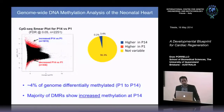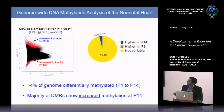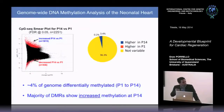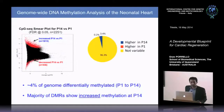Looking at genome-wide methylation changes from P1 to P14, we found thousands of differentially methylated regions, with the vast majority — about 80% — showing increased methylation from P1 to P14. This represents differential methylation of about 4% of the genome, with the majority of regions showing increased methylation at P14.